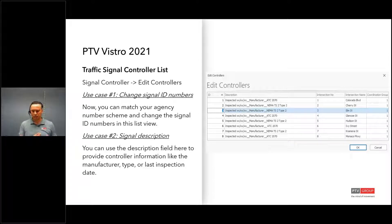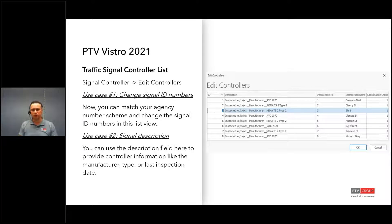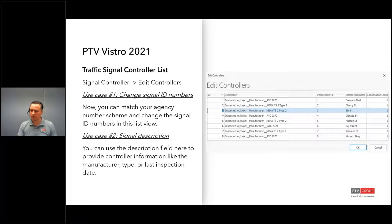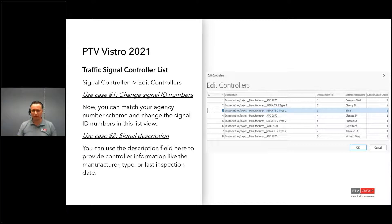We also improved the handling as part of this feature. When you create an intersection in Vistro — say it's intersection 100 — the signal ID will also be signal ID 100 when it's created. If you change that ID from 100 to 200, the signal ID will automatically change with it to signal ID 200. And within this list view, it's flexible and editable so you can change it any way you want.